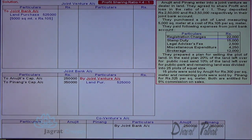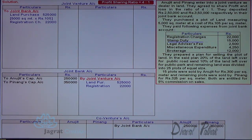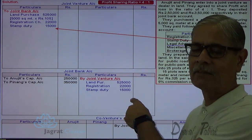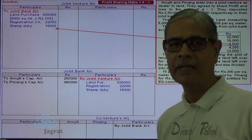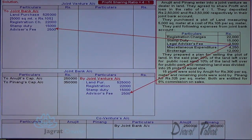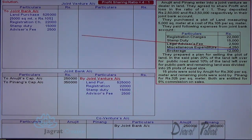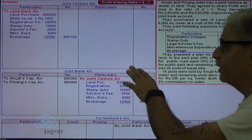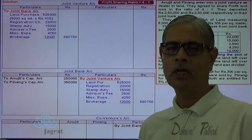These are the expenses paid from the joint bank account. All expenses are debited to joint venture account under the matching concept: joint venture account debit, bank account credit. Similarly, stamp duty paid out of joint bank — joint venture account debit to bank account. Legal advisor's fee, and all other expenses paid, are debited to joint venture account — payment made out of bank, bank is the giver, credit the giver. Miscellaneous expenditure paid — joint venture account debit to joint bank account. Brokerage paid — joint venture account debit to joint bank account. Total payment made out of the joint bank account is 5,750.